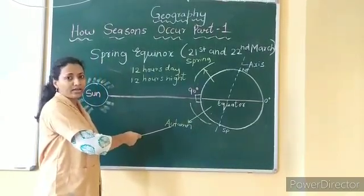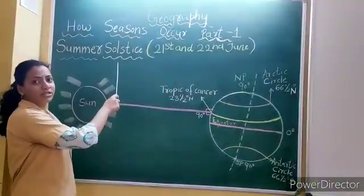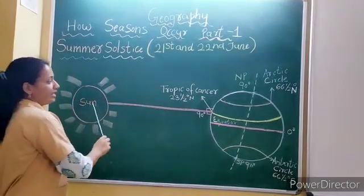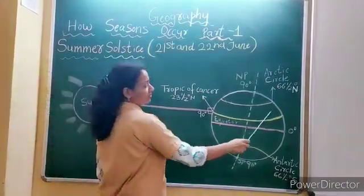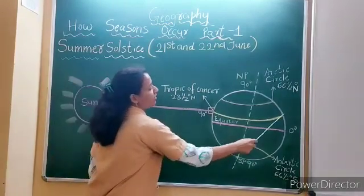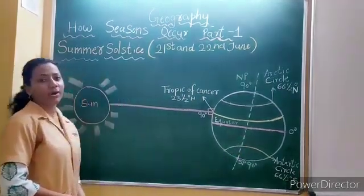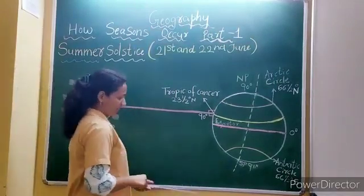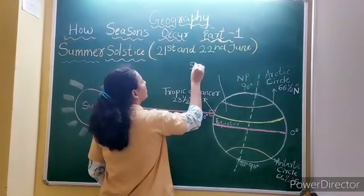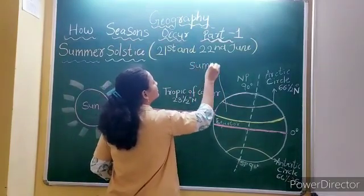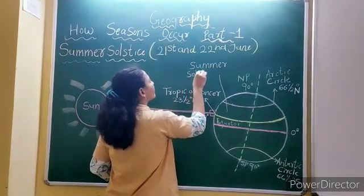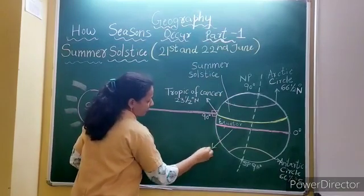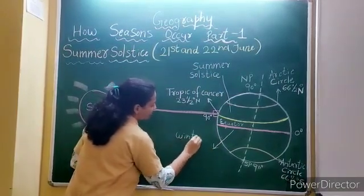Summer solstice occurs on 21st and 22nd June. On this day, sun rays are perpendicular on the Tropic of Cancer. It means the Tropic of Cancer will receive the maximum amount of solar radiation. In the northern hemisphere, it is summer solstice, and in the southern hemisphere, it is winter solstice.